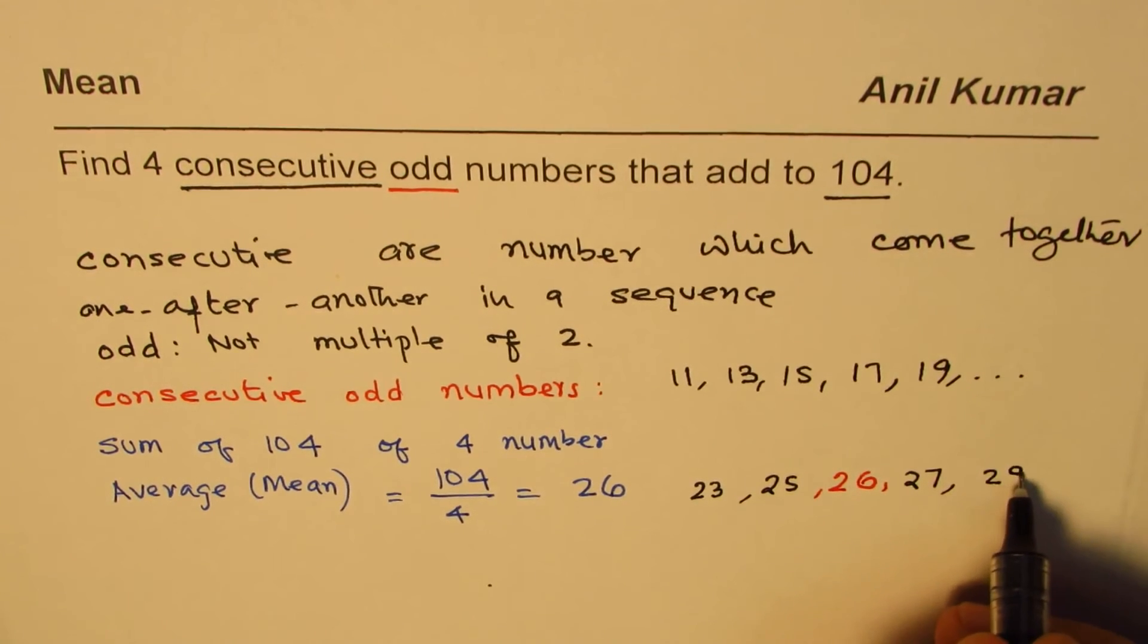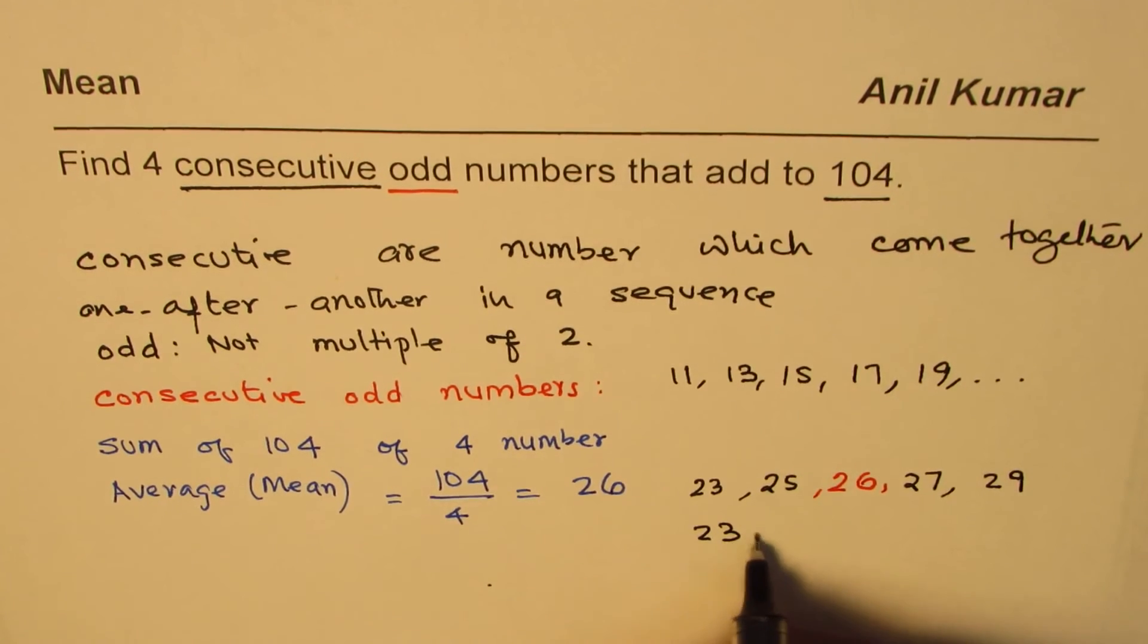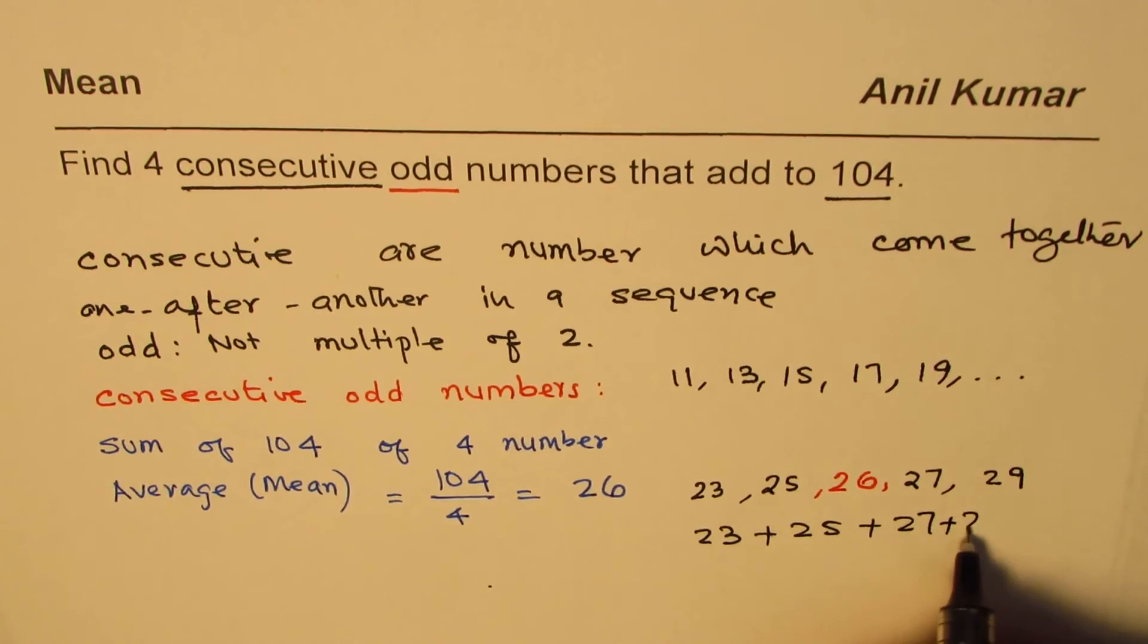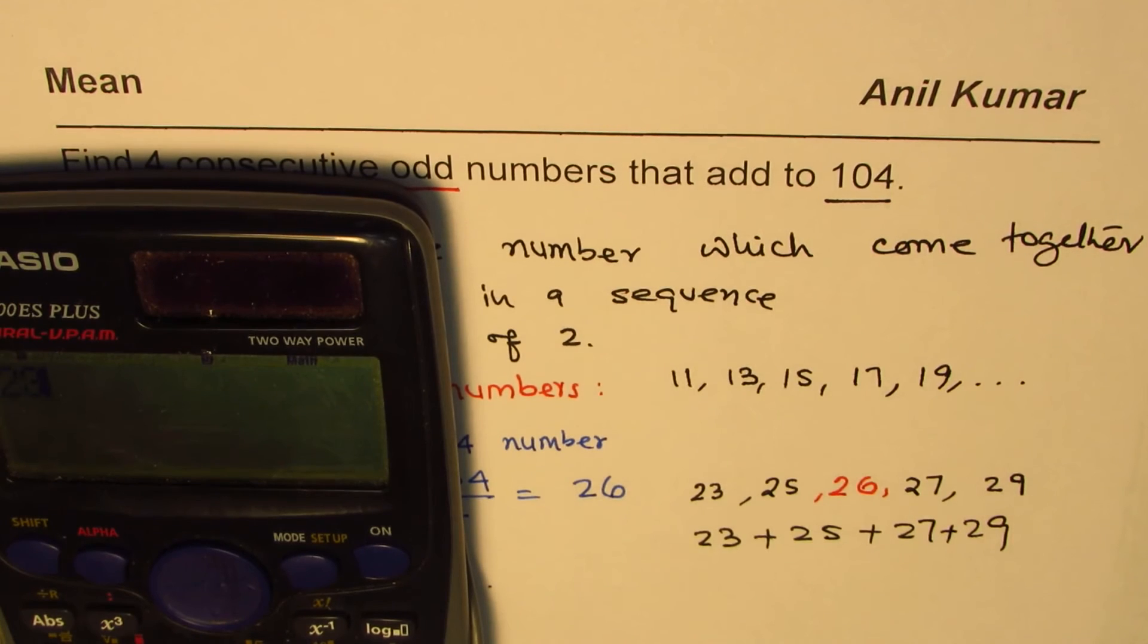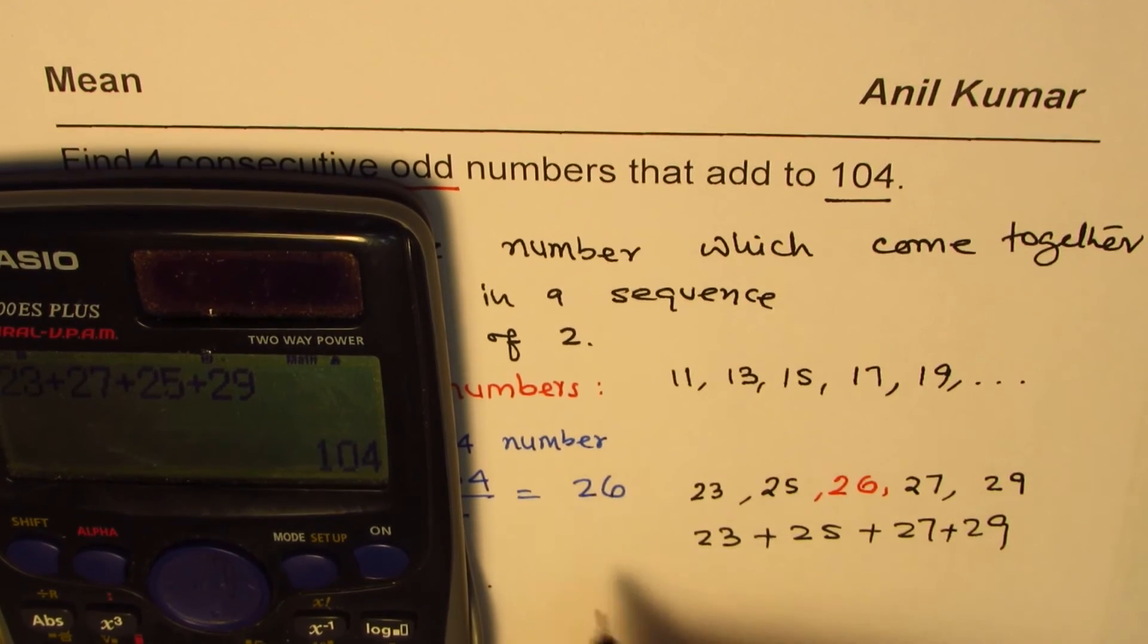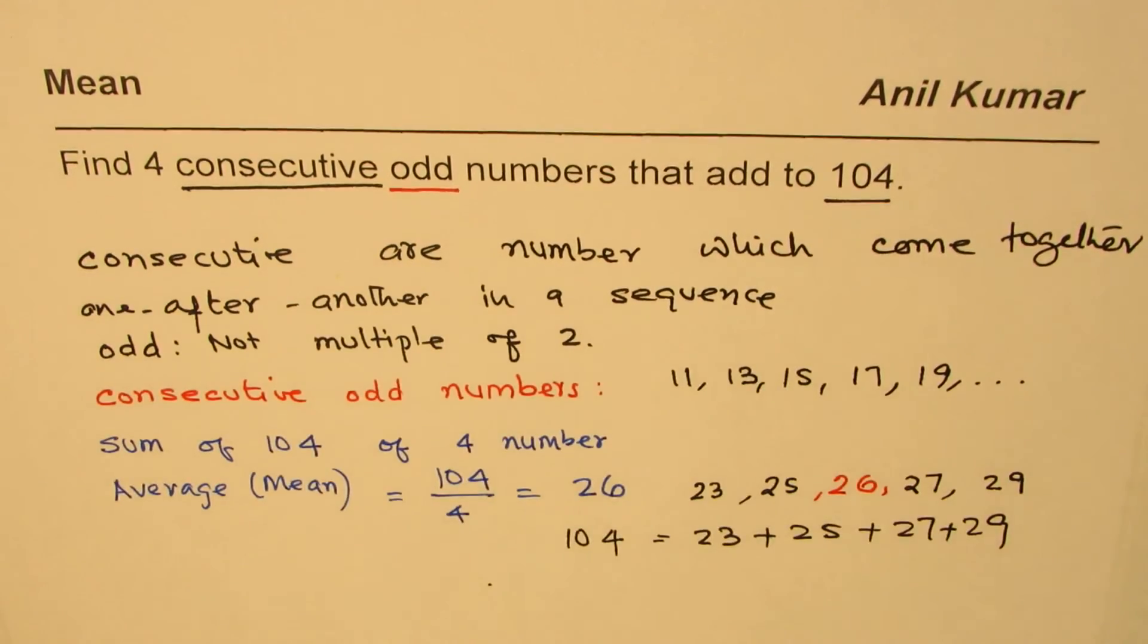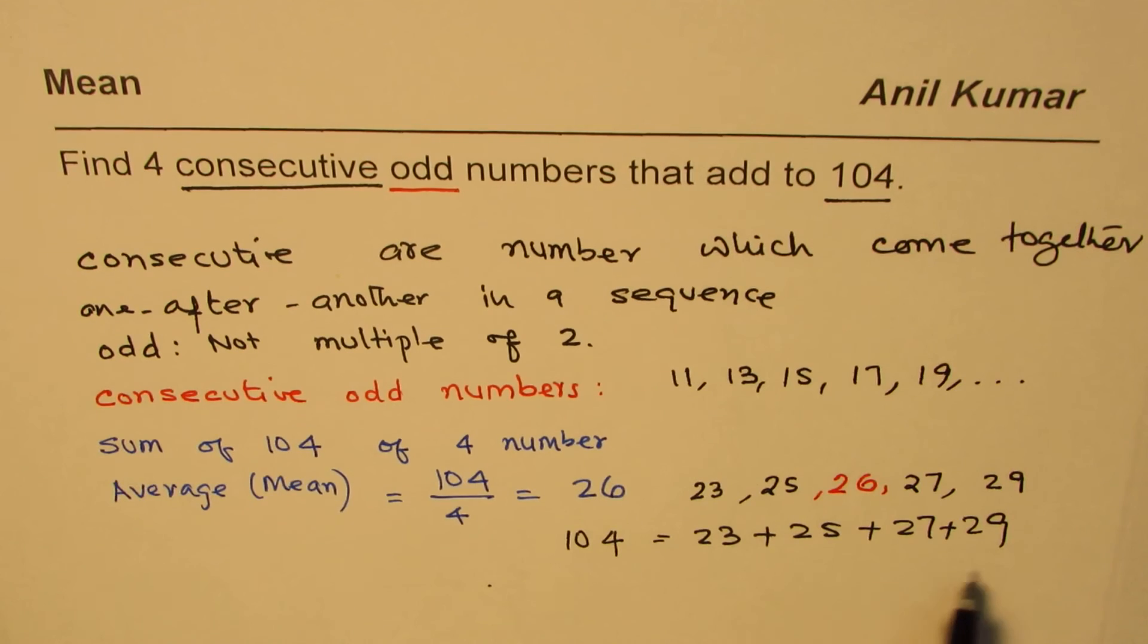Now let us add these numbers: 23 plus 25 plus 27 plus 29. What do we get? Let us see. So we have 23 plus 27 plus 25 plus 29. I changed the order, but it gives me 104, same number.